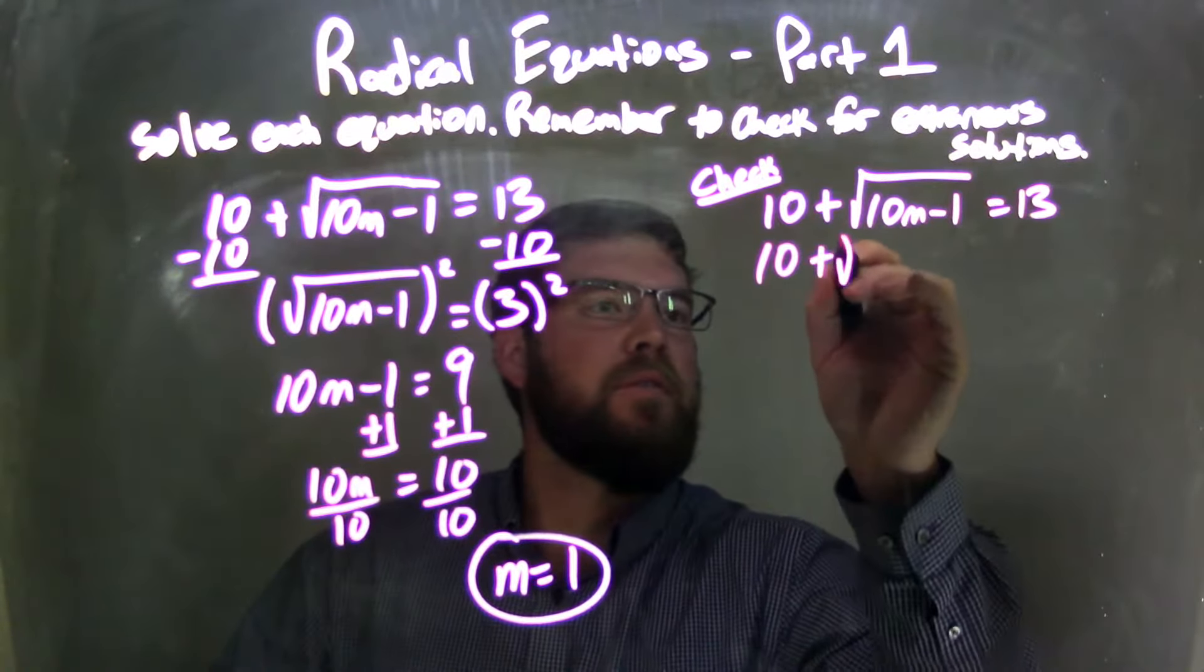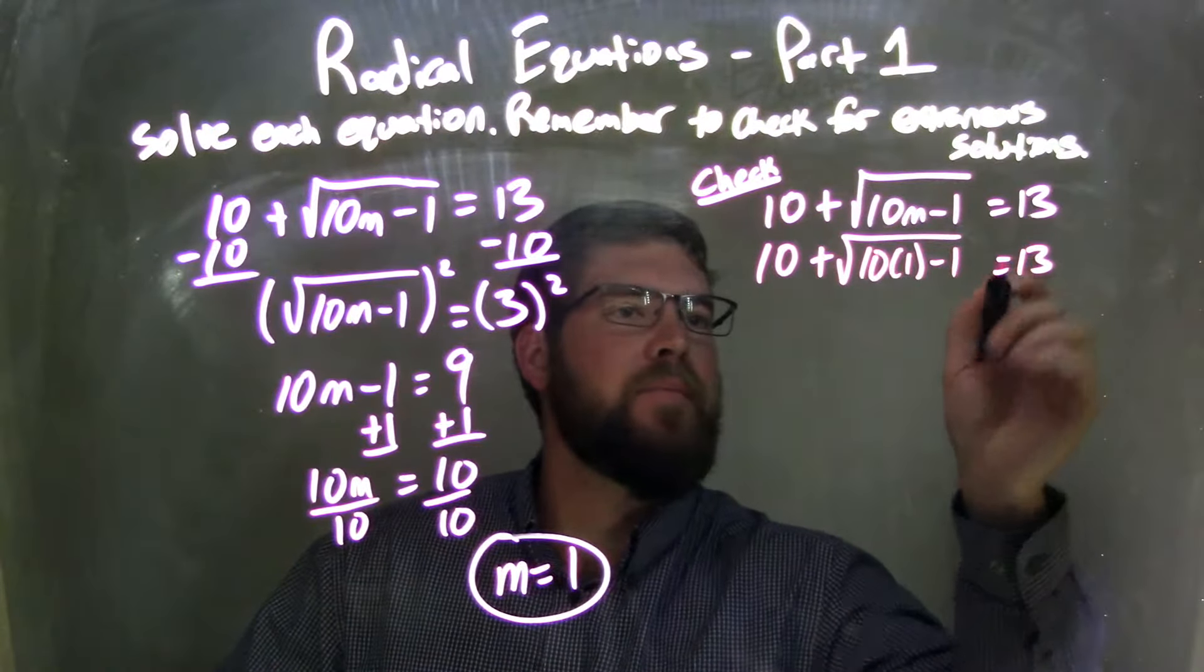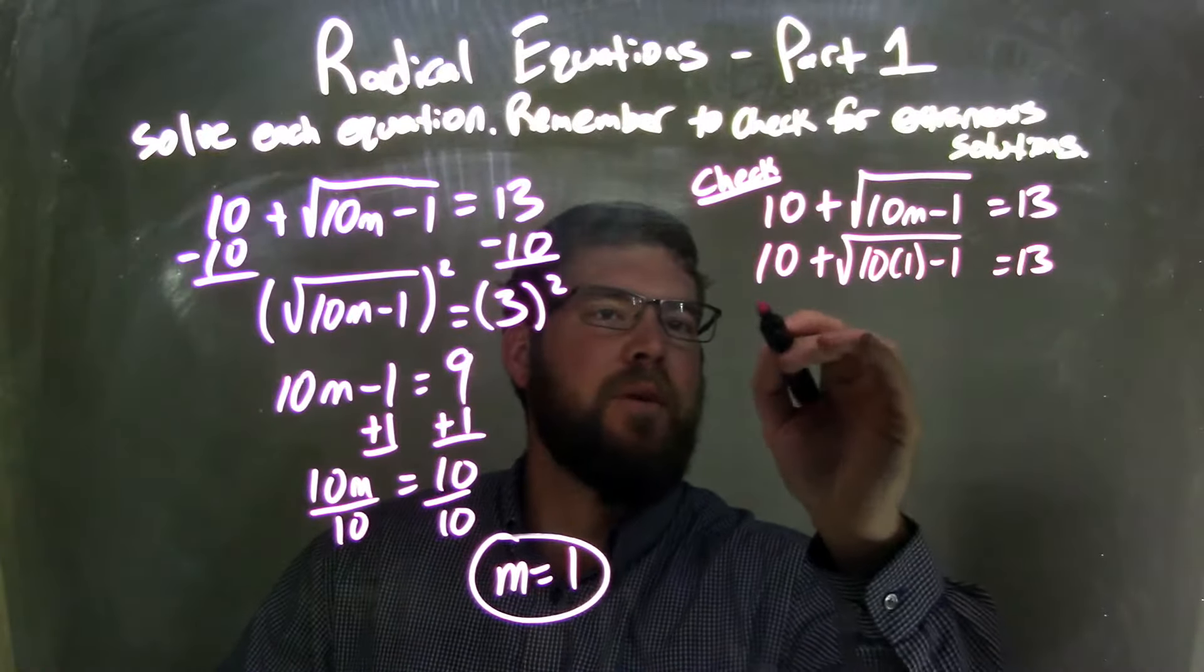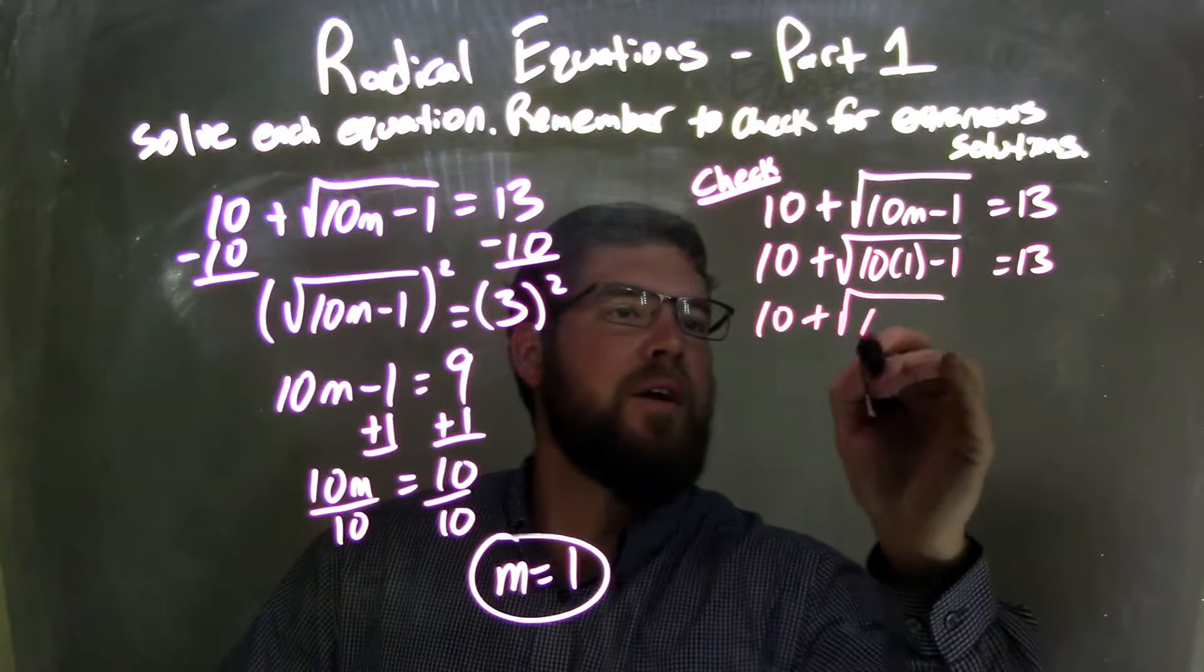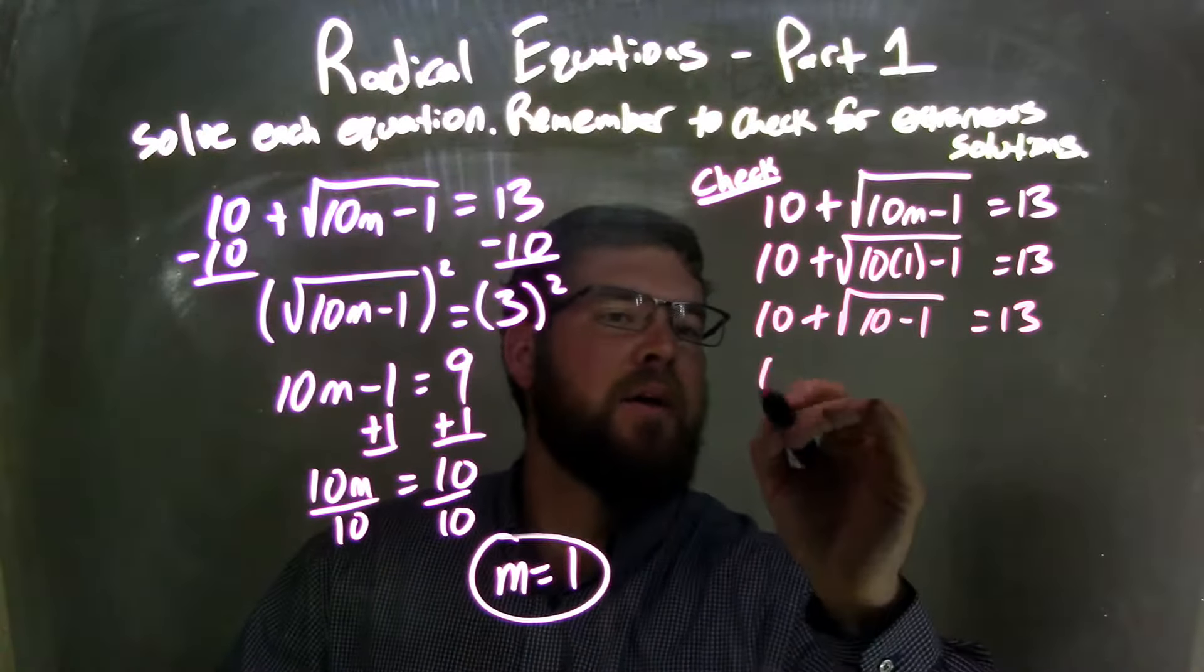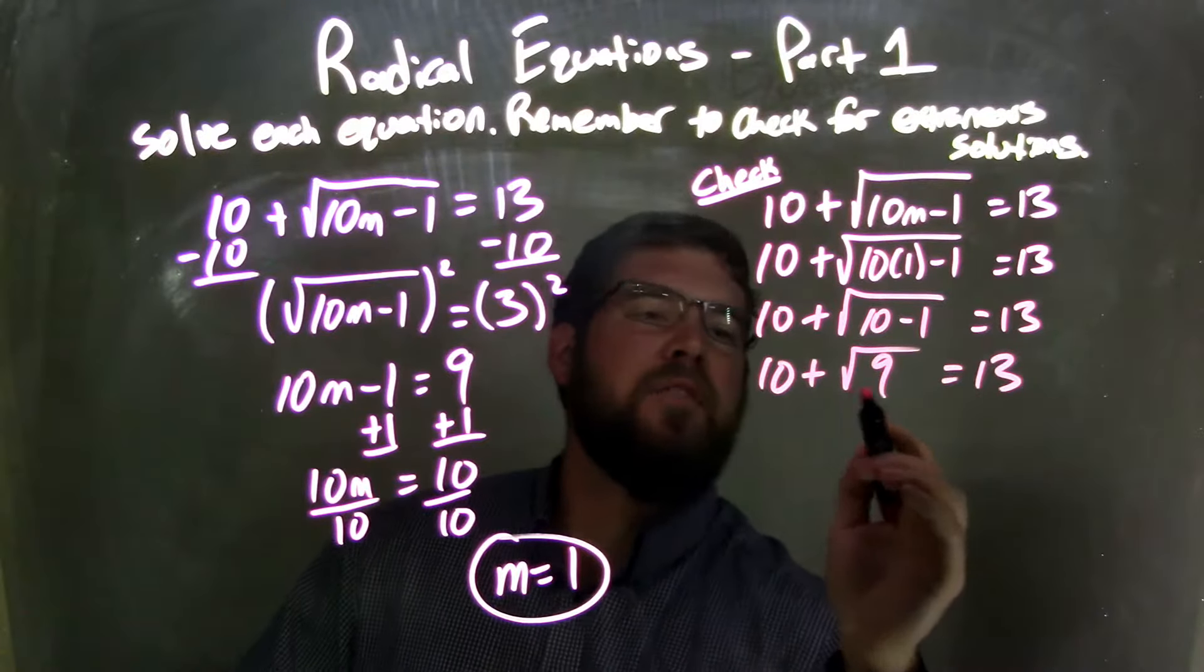So I have 10 plus 10 times 1 minus 1 equals 13. Well, I'm going to simplify this. I have 10 times 1 is 10, so we have 10 plus square root of 10 minus 1 equals 13. 10 minus 1 is 9, so we have square root of 9 in there. Square root of 9 is 3.